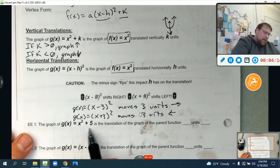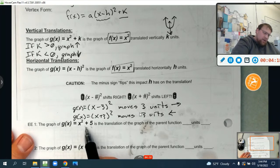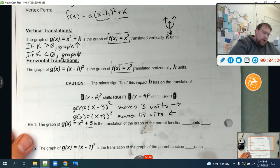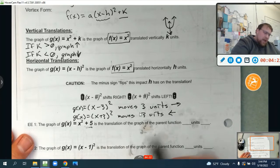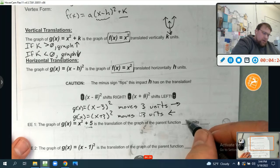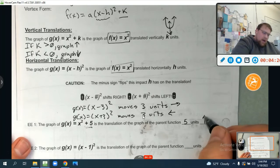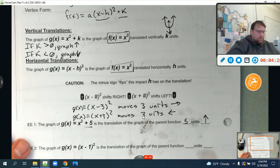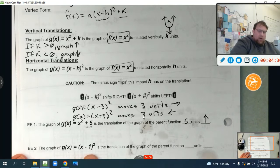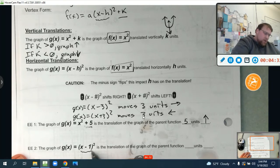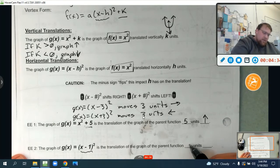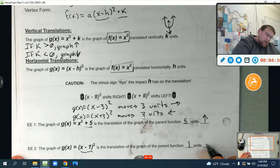So for example, let's look at a k example. The graph of g(x) equals x squared plus 5. Again, that's on the outside, right? No parentheses. Therefore, that's an up or down translation. And that is a translation of the parent function five units up. Whereas down here now we see parentheses and it's minus one. So that's a translation of the parent function one unit right.